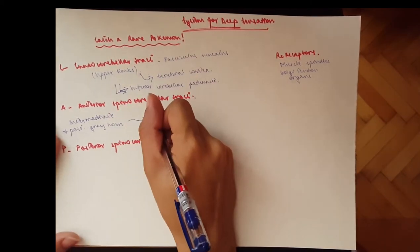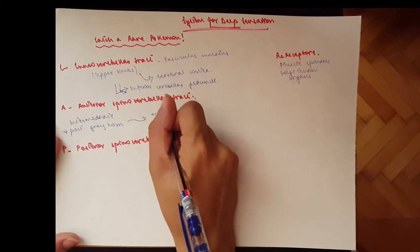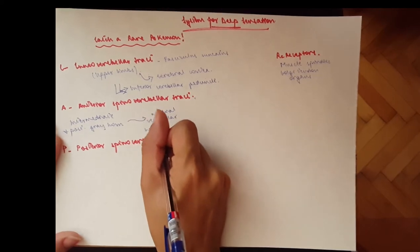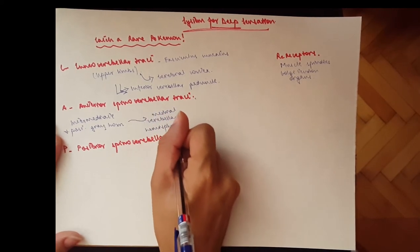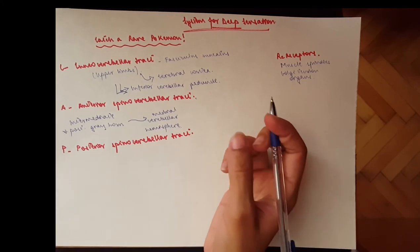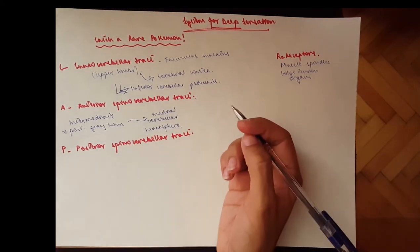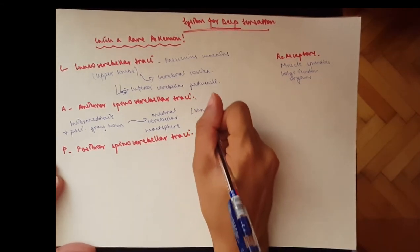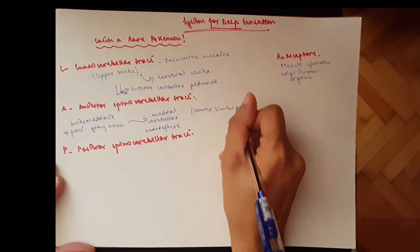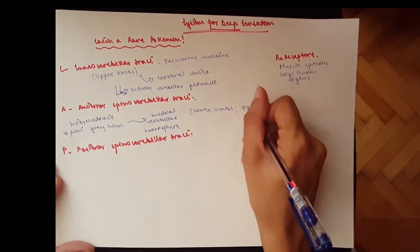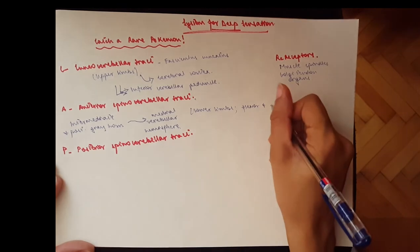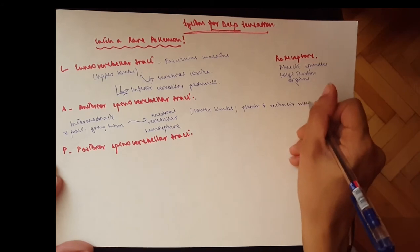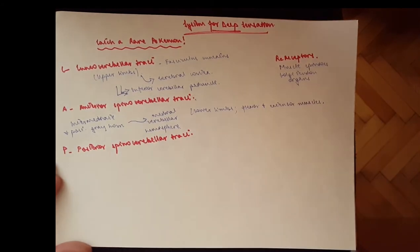Now it crosses the cortex and goes to the medial cerebellar hemisphere. Okay, and this is for the coordination of the flexors and the extensor muscles of the lower limbs. So this one would be lower limbs, and it's for the coordination of the flexor and extensor muscles during standing and walking.